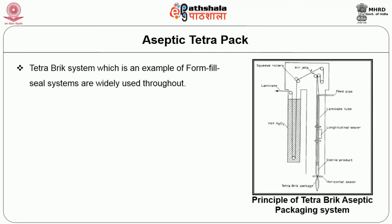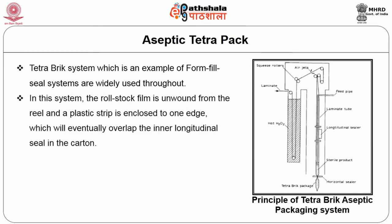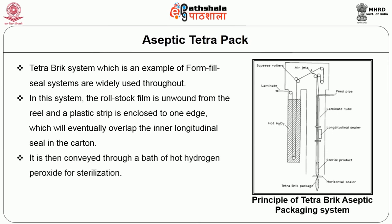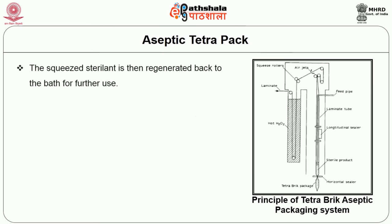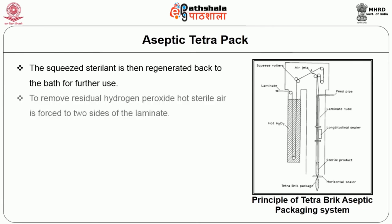The Tetra Brick system, which is an example of form-fill-seal systems, is widely used. In this system, the rolled stock film is unwound from the reel and a plastic strip is enclosed to one edge which will eventually overlap the inner longitudinal seal in the carton. It is then conveyed through a bath of hot hydrogen peroxide for sterilization. The wetted laminate is then passed through a set of rollers that remove the liquid hydrogen peroxide, which is squeezed out and regenerated back to the bath for further use.